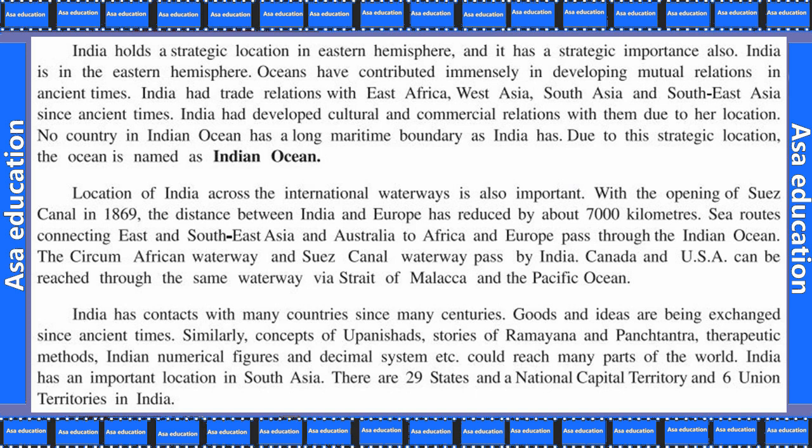No country in the Indian Ocean has as long a maritime boundary as India. Due to its strategic location, the ocean is named the Indian Ocean, and India's location across the international waterways is also important. With the opening of the Suez Canal in 1869, the distance between India and Europe was reduced by about 7,000 km. Sea routes connecting East and Southeast Asia, Australia, Africa, and Europe pass through the Indian Ocean. The circum-African waterway and Suez Canal waterways pass by India, and Canada and the USA can be reached through the Strait of Malacca and the Pacific Ocean.